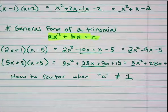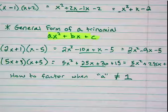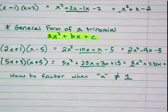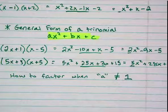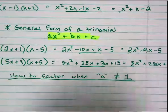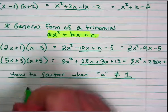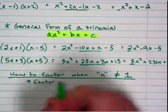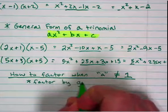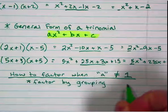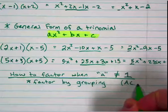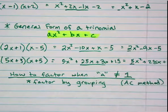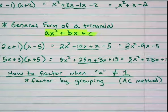A could be bigger than 1, it could be a fraction, or it could be a negative number — we'll deal with negatives later. How do you factor when a is not equal to 1? This is something we call factor by grouping, or a short way we do this is called the AC method.